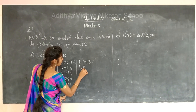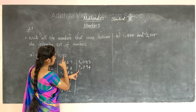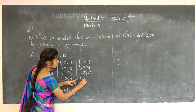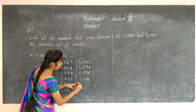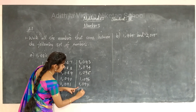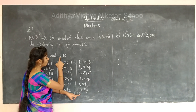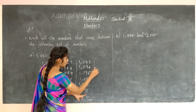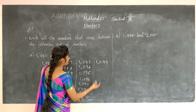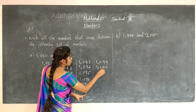Then 1094. We need to write up to 1110. Continuing: 1095, 1096, 1097, 1098. Then 1099. Then the next number is 1100 — after 99 comes 100.